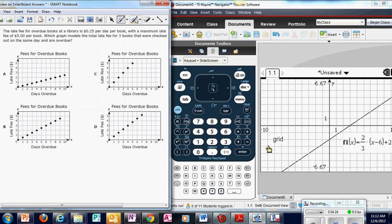Next problem. The late fee for overdue books in the library is 25 cents per day per book. With a maximum late fee of $5. Which of the graphs models the total late fee for three books that were checked out at the same time? It's important to know they were checked out at the same time, because if I have them late on different days, that could be a little more complex of a problem. So first off, let's note that if I check out one book and it's late, it's 25 cents. But this says I have three. So that times three would mean it's 75 cents per day for three books.